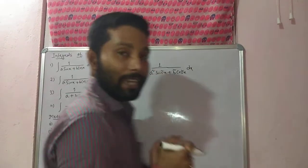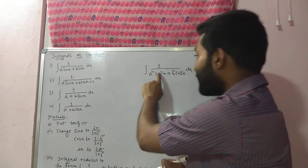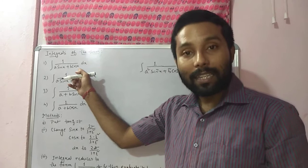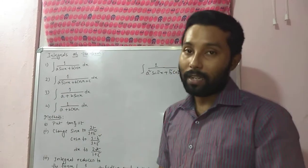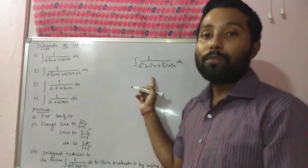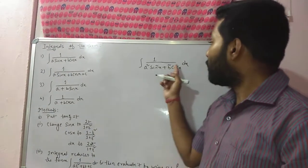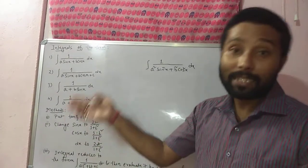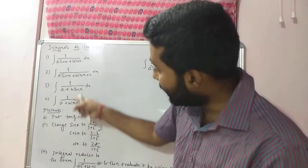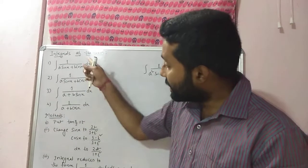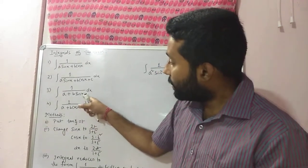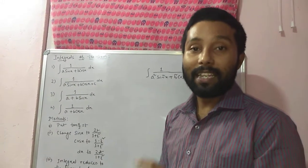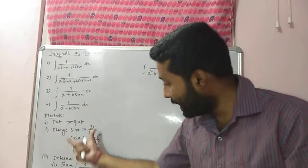Today, the trigonometric ratio's highest power is one — not more than one. But yesterday, the minimum power was two. So today you can follow these three steps because the highest power of the trigonometric ratio is exactly one.